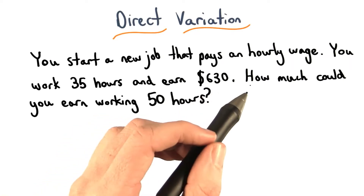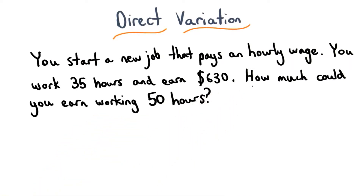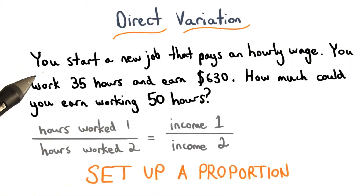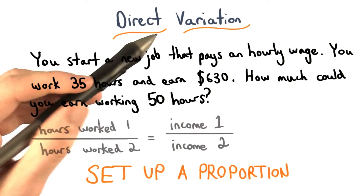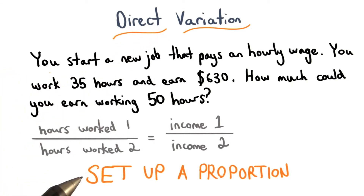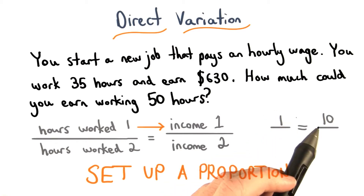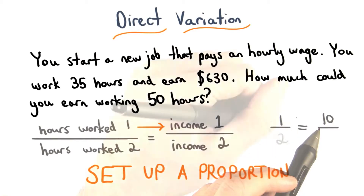How much could you earn working 50 hours? Whenever we solve problems involving variation, we want to set up a proportion. Let's make this really simple. If I worked one hour, I would earn $10 based on my original example.